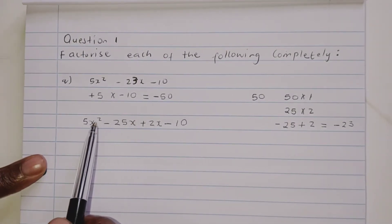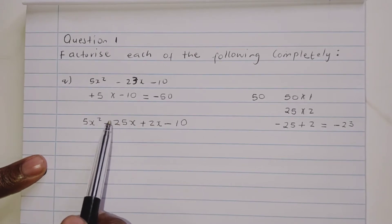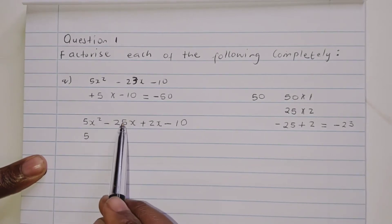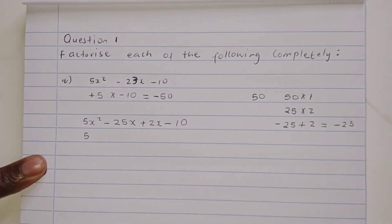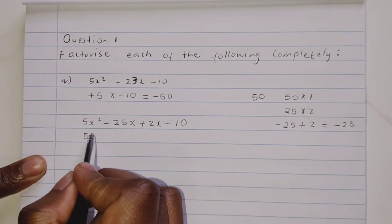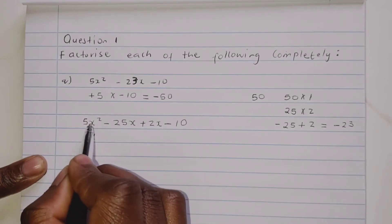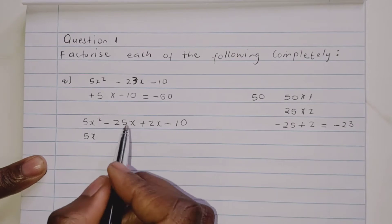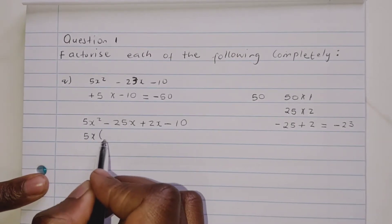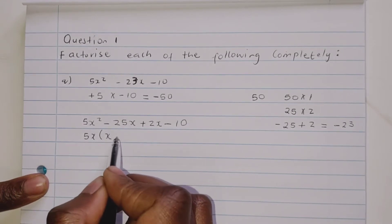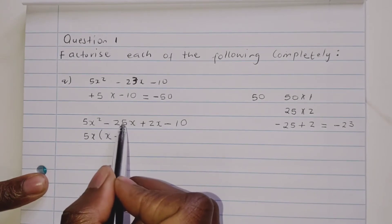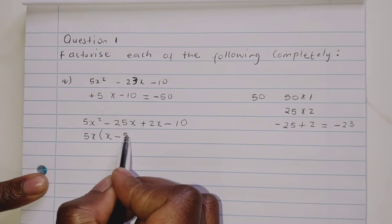Now we're gonna look for the common factor. What is common in the first two terms? 5 is common — 5 goes into 25 five times. x is also common because we have x in both terms. So we factor out 5x, and we're remaining with x minus 5.